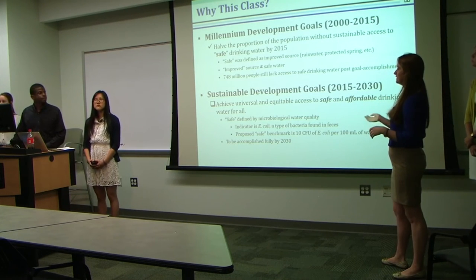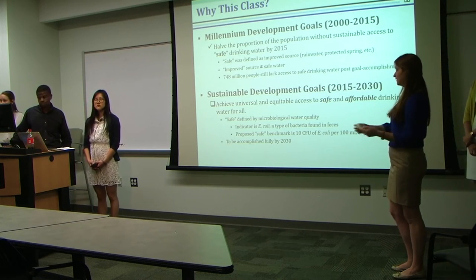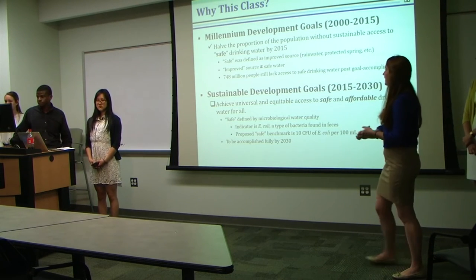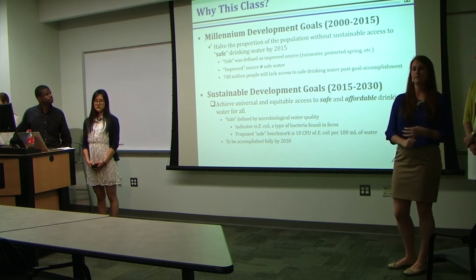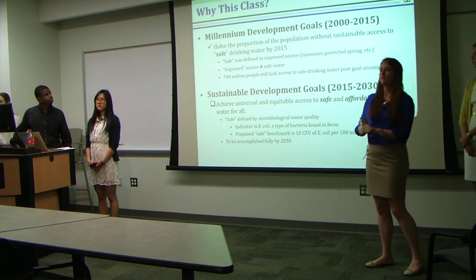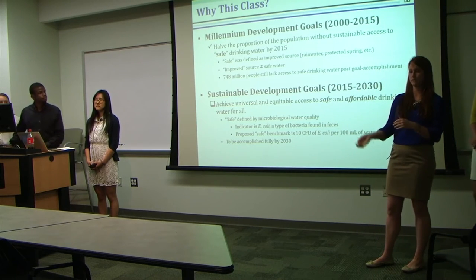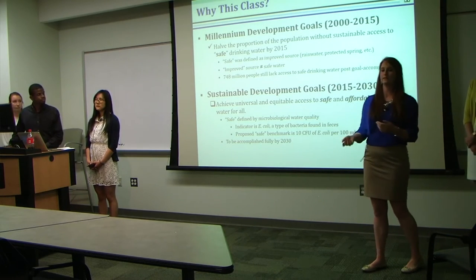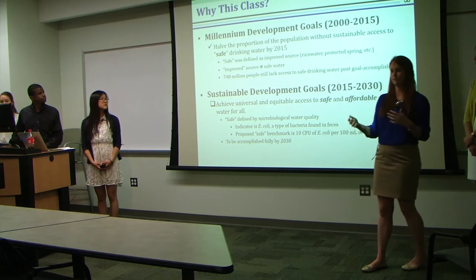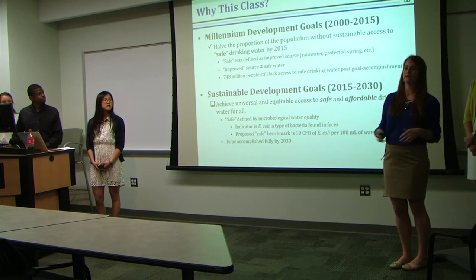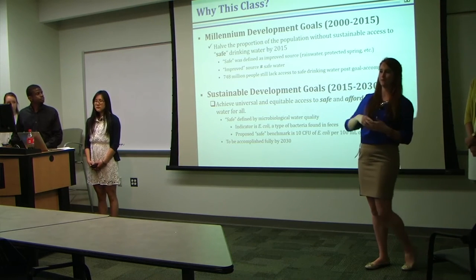That goal was actually accomplished by the year 2010. But the problem we found was that 'safe' was defined as an 'improved source,' which included rainwater, a protected spring, a protected well, or piped on premises or into the home. The issue with that is that a source piped into my home can still be contaminated with fecal matter—I can still have E. coli in it, and I can still get sick from these piped sources.